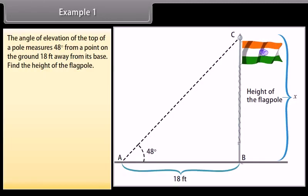Let's solve some examples to understand better about angle of elevation and depression. The angle of elevation of the top of a pole measures 48 degrees from a point on the ground 18 feet away from its base. Find the height of the flagpole. Let's first visualize the situation. Let x be the height of the flagpole.